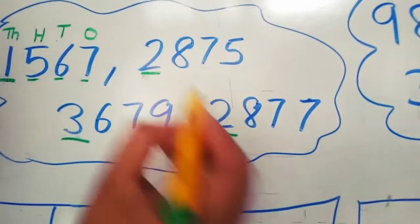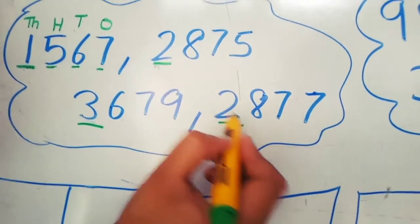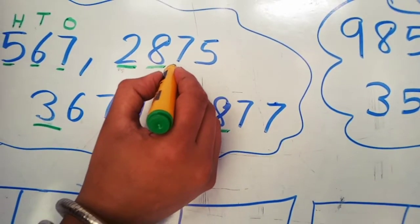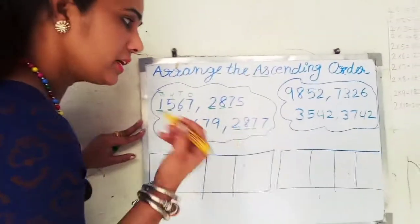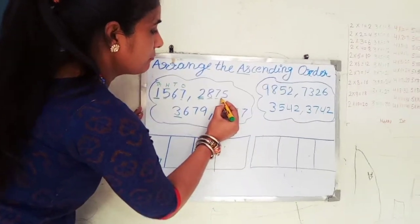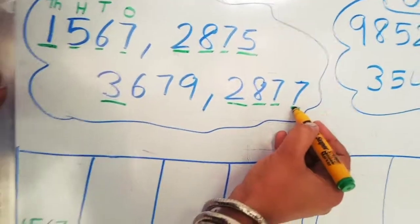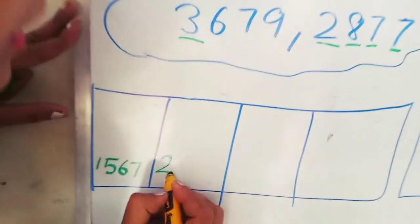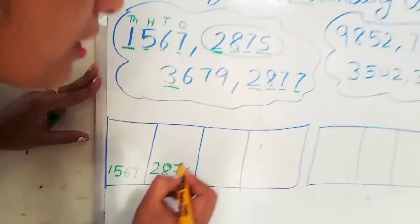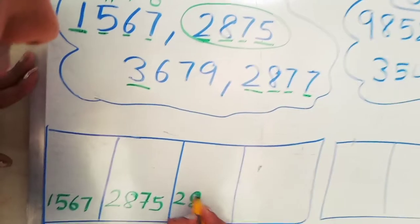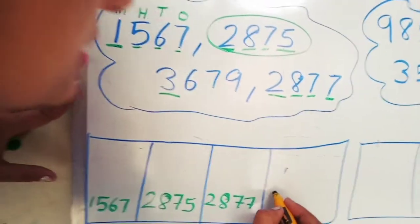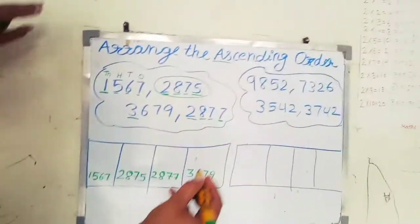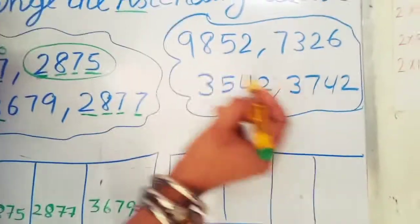Now check the next two numbers. We check the hundreds: eight and eight — equal. Tens: seven and seven — also equal. Now we check the ones: five and seven. Seven is bigger than five, so the smallest number is two thousand eight hundred seventy-five, then two thousand eight hundred seventy-seven, and the last number is three thousand six hundred seventy-nine.